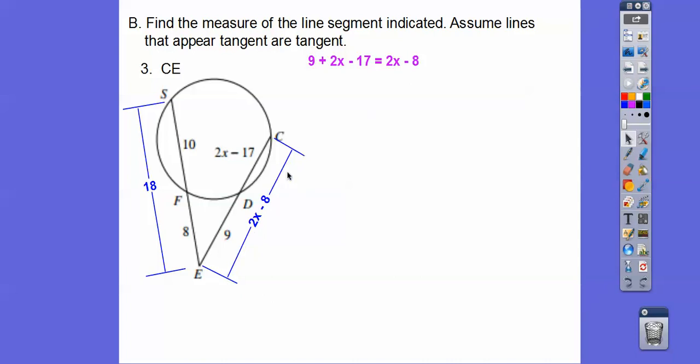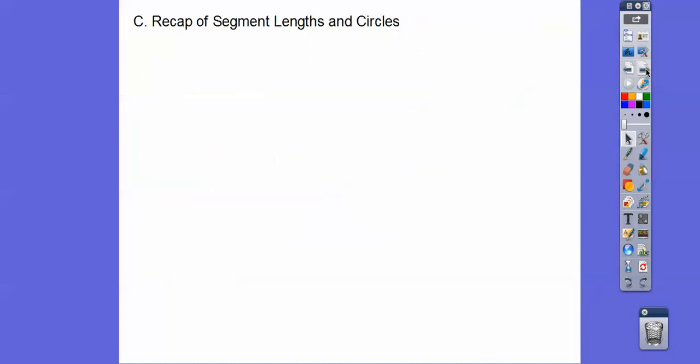The whole is 18. So here we go, outer times whole, outer times whole, distribute through. Add 72 to both sides, divide by 18, we get x equals 12. Now we're not finding x, we're finding CE. So CE is the whole segment, 2x minus 8, so we plug in 12 and we get 16.